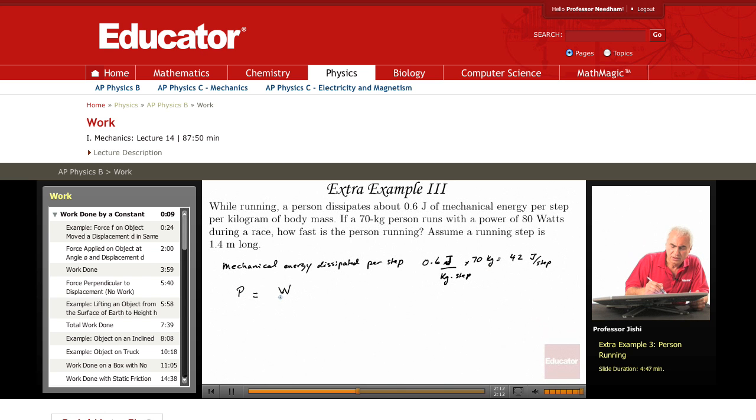So, if a person makes one step, this step takes time delta T to make. Delta T is the time to make a step.